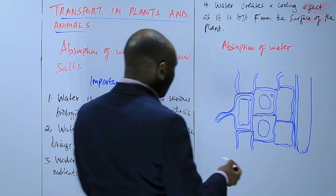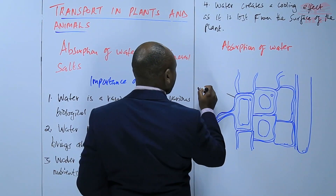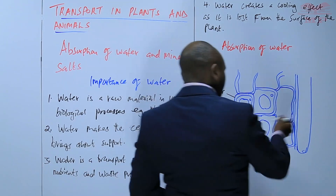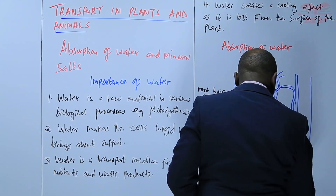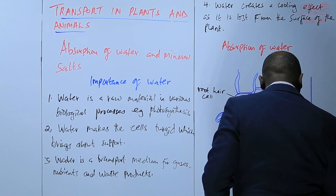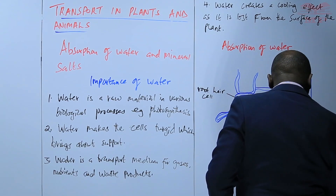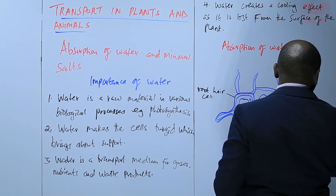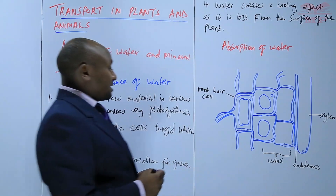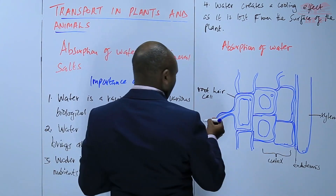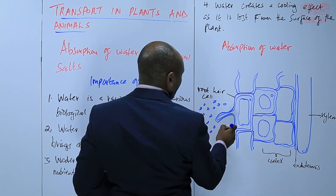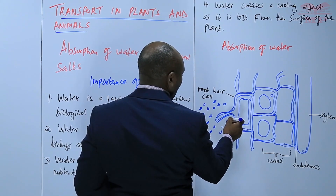We have a diagram. This is a root hair cell. These are other neighboring cells, such as the cortical cells — the cells of the cortex. We have the endodermis, and then finally we have the xylem. And of course we have the soil here, which contains what we call the soil water.